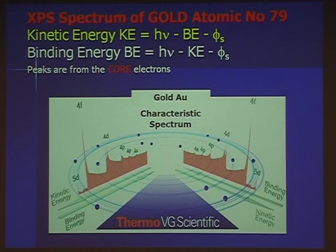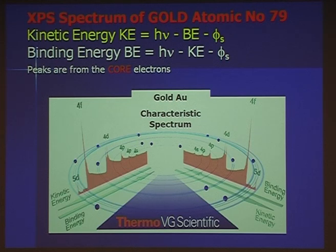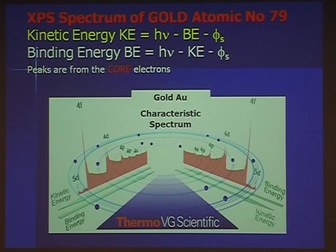If you take an element like gold, atomic number 79, with lots of electrons — the 1s, 2s, 4s, 4p, 4d, 4f, 5d — and bombard it with X-rays of energy over about 1200 eV, out come all these electrons. Here's the XPS spectrum of gold. No two elements have the same electronic configuration, so you get a characteristic spectrum. Lead and other elements in a similar position in the periodic table give similar-looking spectra, but their peaks are in different positions. All these peaks come from what we call the core level electrons.